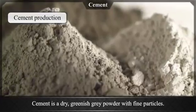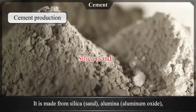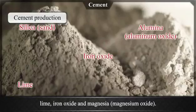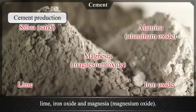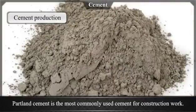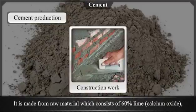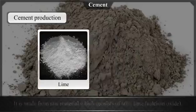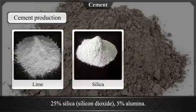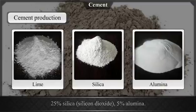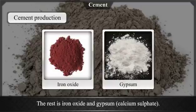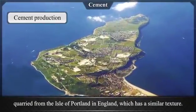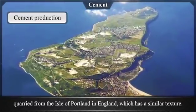Cement is made from silica (sand), alumina (aluminium oxide), lime, iron oxide, and magnesia (magnesium oxide). Portland cement is the most commonly used cement for construction work. It is made from raw material consisting of 60% lime (calcium oxide), 25% silica (silicon dioxide), 5% alumina, and the rest iron oxide and gypsum (calcium sulphate). Portland cement gets its name from stone quarried from the Isle of Portland in England, which has a similar texture.